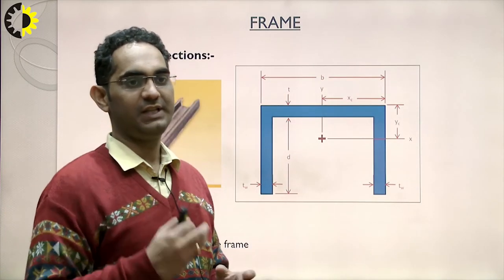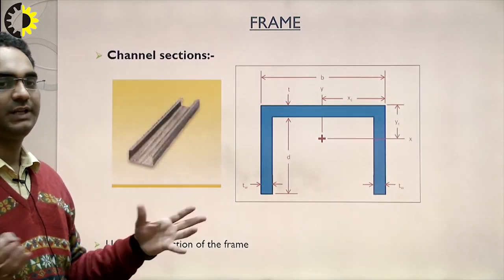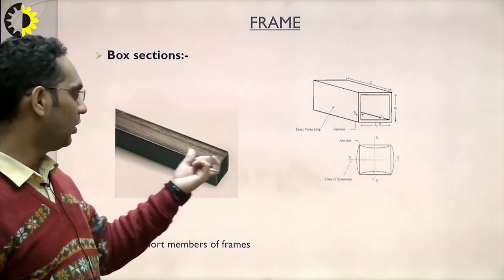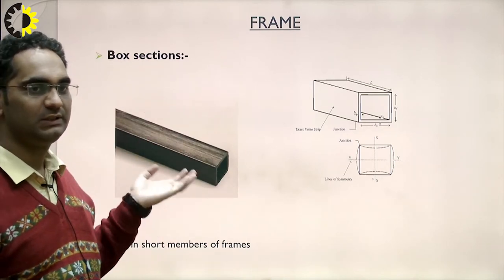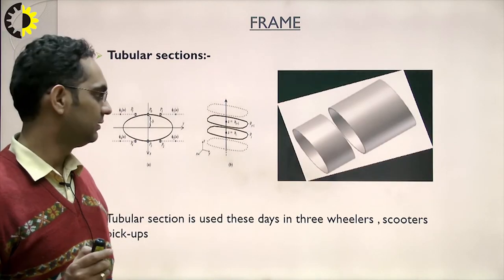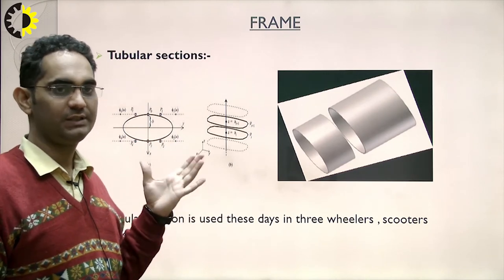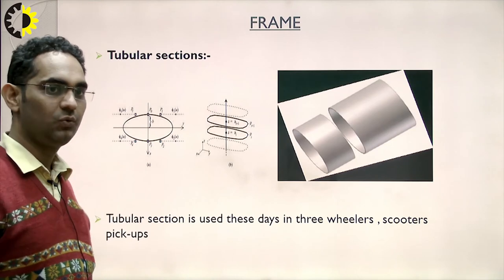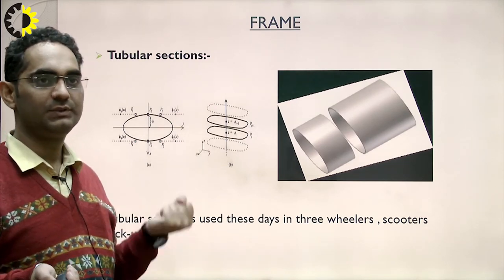Channel sections are used for the long sections of frames. Box sections are used in the short members of frames. Tubular sections, which are tube-like structures, are used these days in three-wheelers, scooters, and pickups.